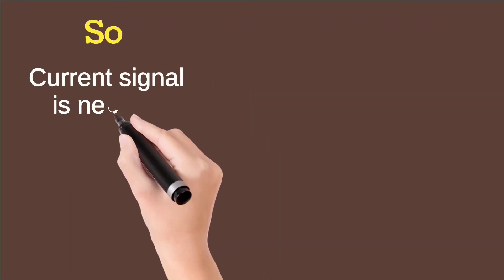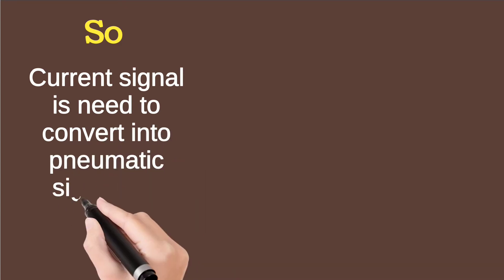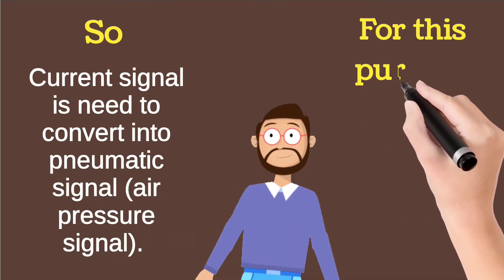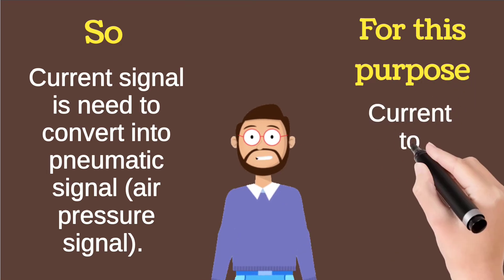So current signal needs to convert into pneumatic signal or air signal. For this purpose, current to pressure converter is used.